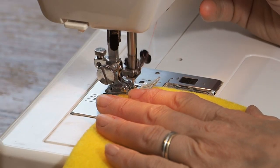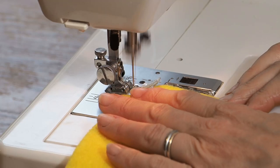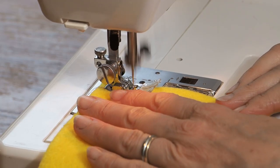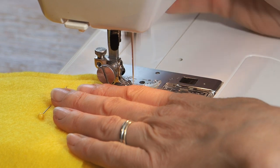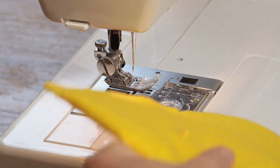So I'm just going to stitch all along that side just about a presser foot width from the edge of the pouch. Just takes a second, stitch right up to the edge where it's folded over.